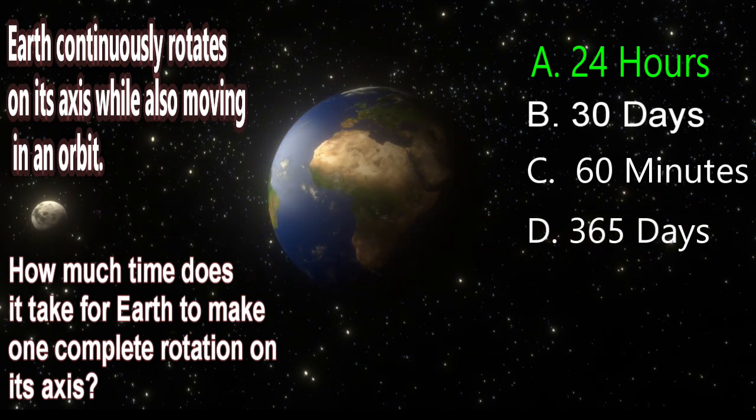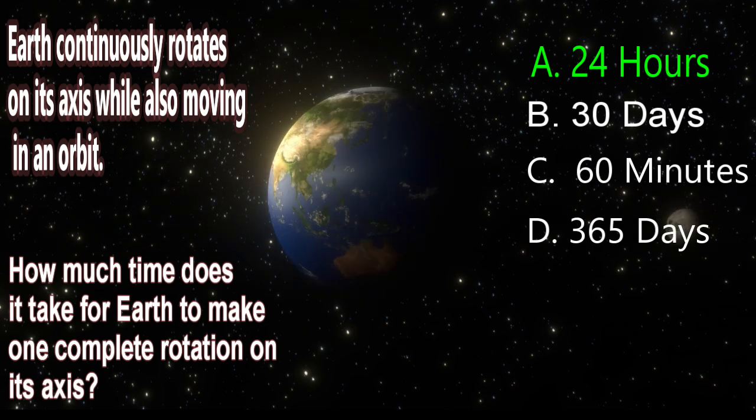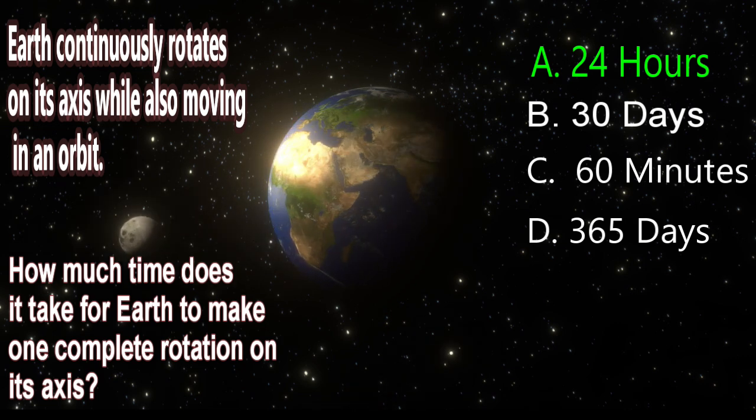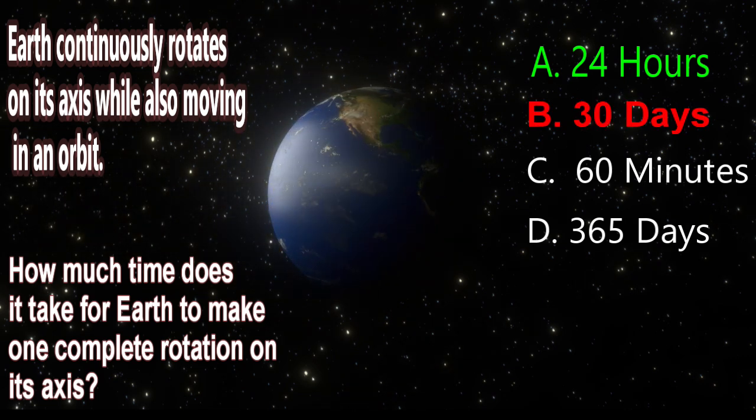Let's look at the other answer choices and see why they are incorrect. B. 30 days is the time it takes the Moon to orbit the Earth, not how long it takes for Earth to rotate on its axis.